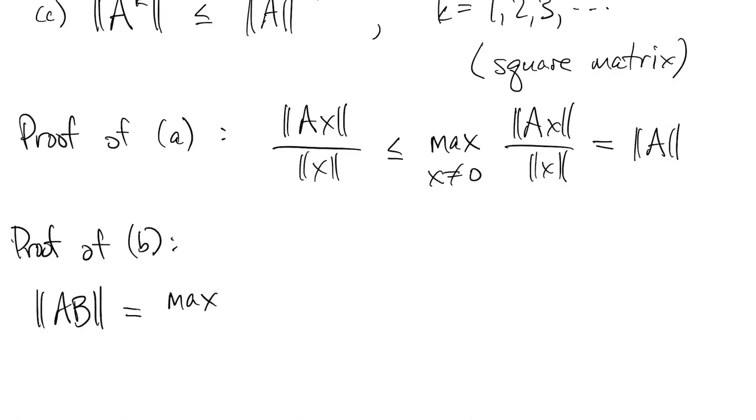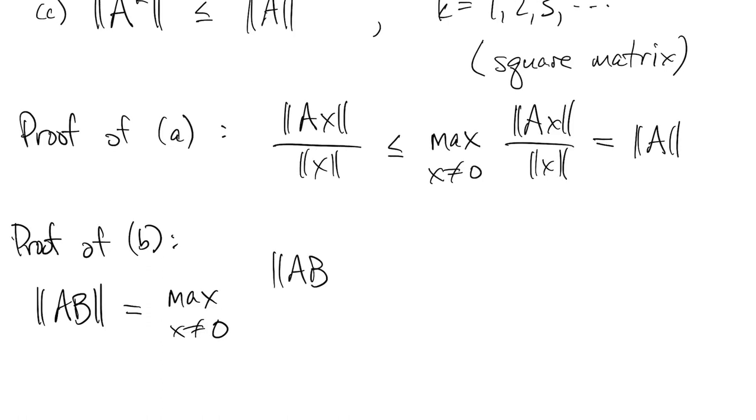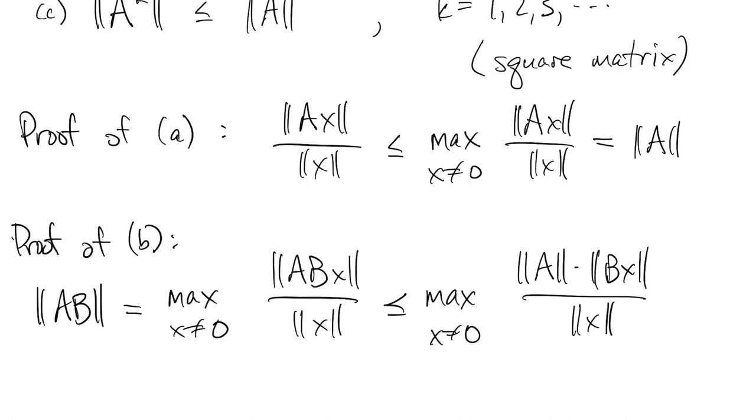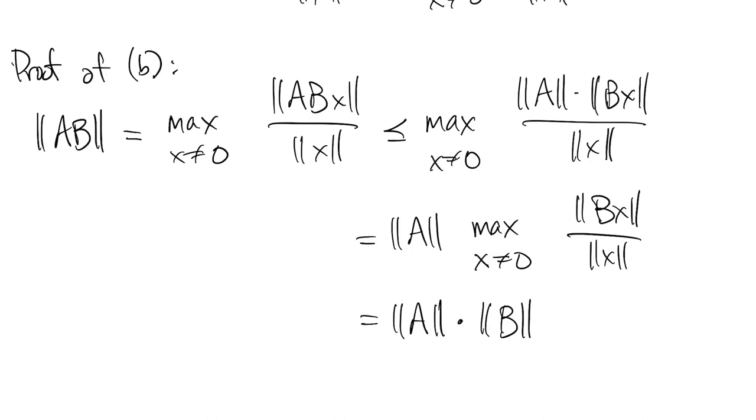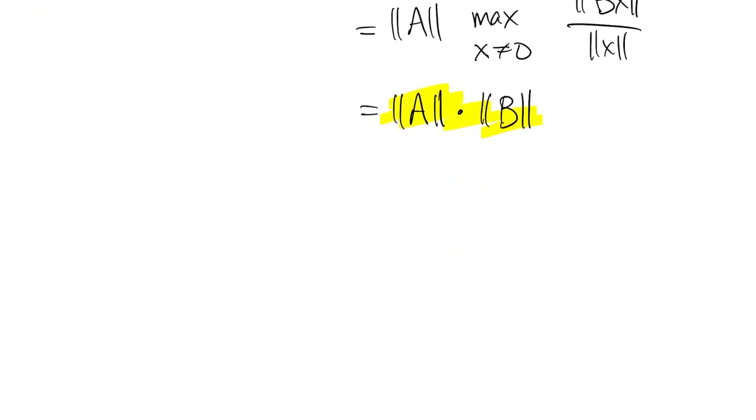To prove B, again we're just appealing to the definitions. The definition of the norm of AB, well that's a matrix, so it's the norm of ABx over the norm of x. But by what we just proved, that's less than or equal to the norm of A times the norm of Bx in the numerator. But the norm of A doesn't depend on x, so we can draw it through that maximum. And then what remains here is the norm of B. So from beginning to end we can say that the norm of the product is less than or equal to the product of the norms. Finally, part C just follows from applying part B, where B is equal to A.